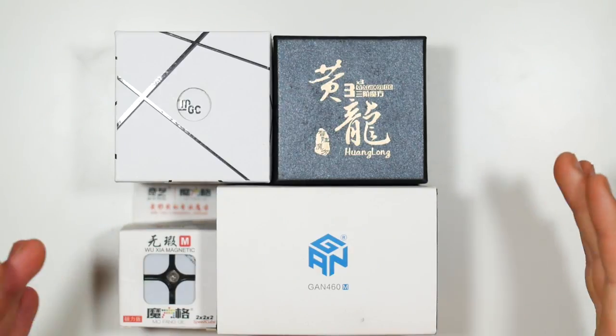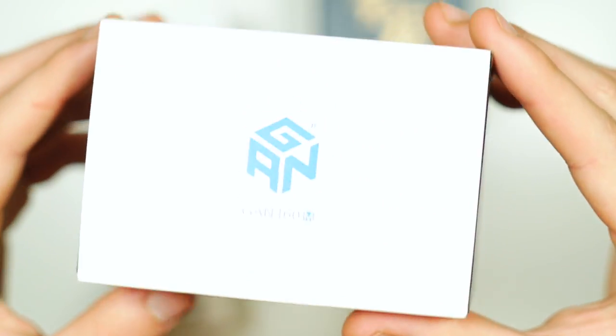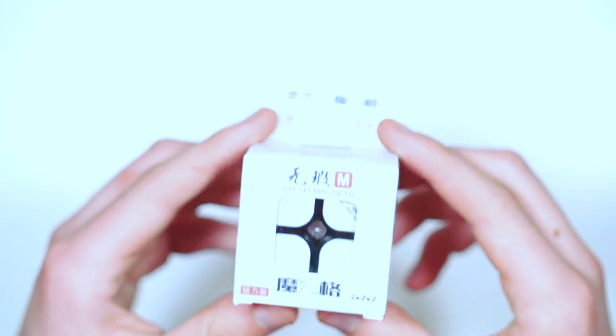Today we're doing a massive unboxing. We're looking at the Qi Wuxua M, the YJ MGC, the Yuxian Huanglong, and a GAN 460M. Starting off with the Qi Wuxua M.